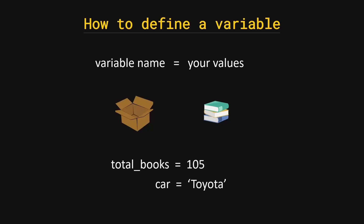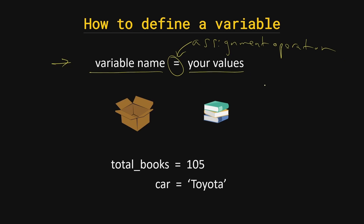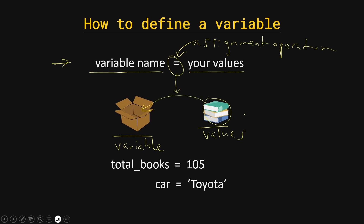Now let's see how to define a variable. In Python you can define a variable in this format: on the left-hand side you have the variable name, and the equal sign is the assignment operator, and on the right-hand side you have your values. Think of the books as your values and the box as your variable — the equal sign puts the books into the box.